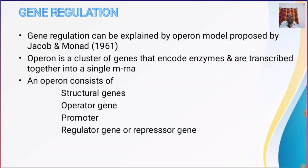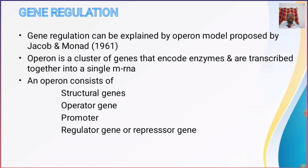The concept of gene regulation was first explained by Jacob and Monod in 1961 through the operon model. An operon is a cluster — or group — of adjacent genes that encode enzymes and are transcribed together into a single mRNA. All these cluster of genes, which we call an operon, are transcribed together into a single mRNA.